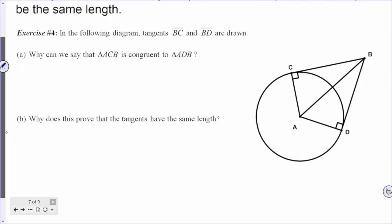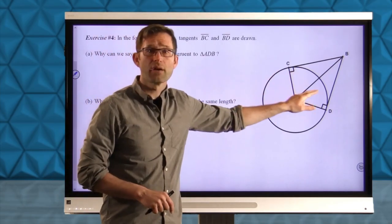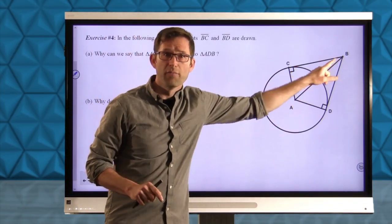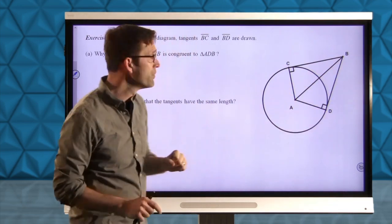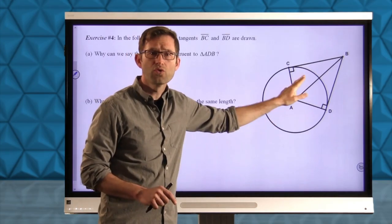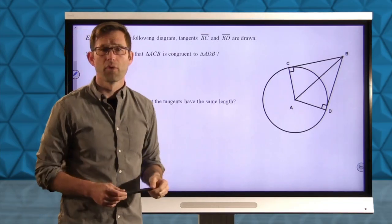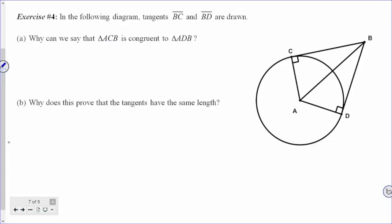In exercise number four, it says in the following diagram, tangents BC and BD are drawn. And I've already put the 90 degree angles in there. That's that theorem that says, if BC and BD are tangents, then they're going to be perpendicular to radius AC and AD. And letter A just asks, why can we say that triangle ACB is congruent to triangle ADB? So why do these two triangles have to be congruent? Think about that for a moment. Try to write something down. A little mini geometry proof here.